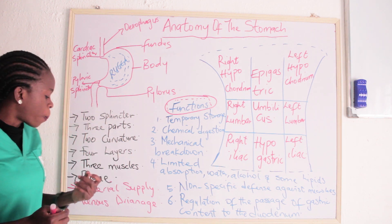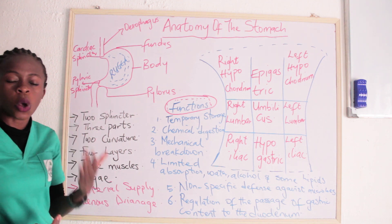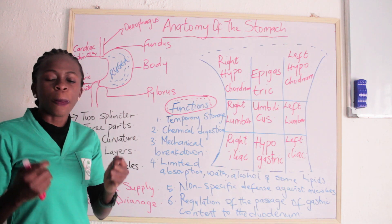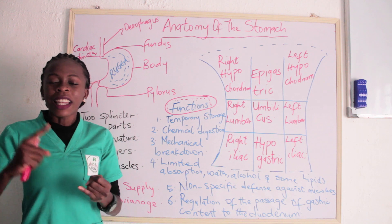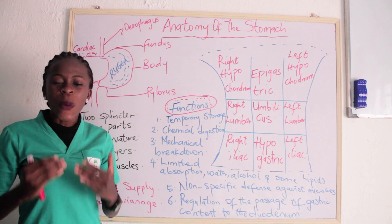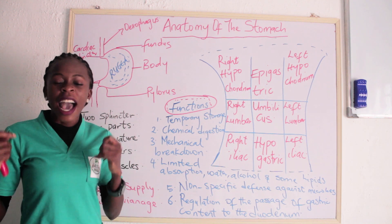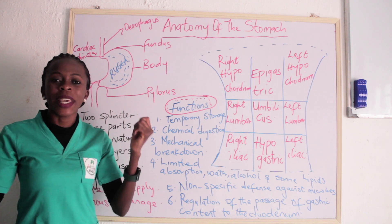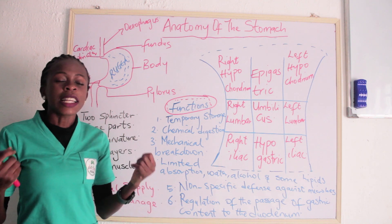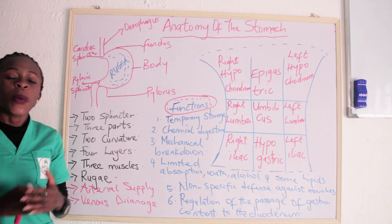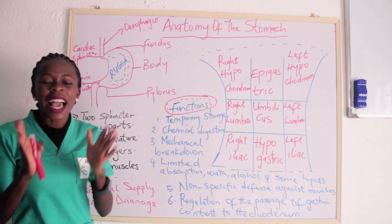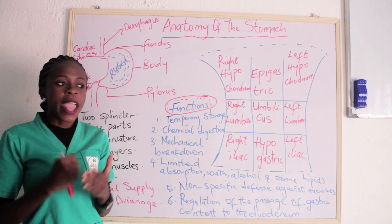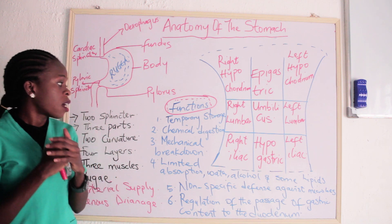Now let's talk about the blood supply — the arterial supply of the stomach. The arterial supply is from the left and right gastric artery and also the gastroepiploic artery. In terms of venous drainage, we have the left and right gastric vein and also the gastroepiploic vein.